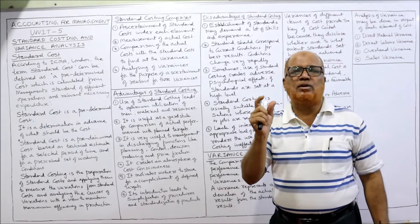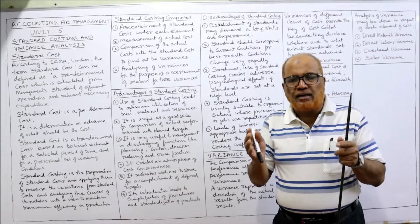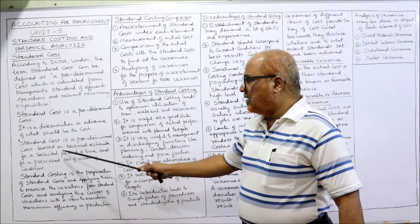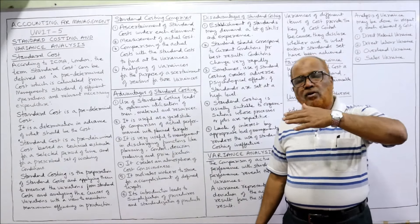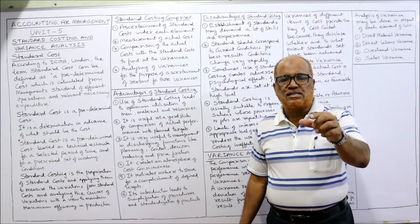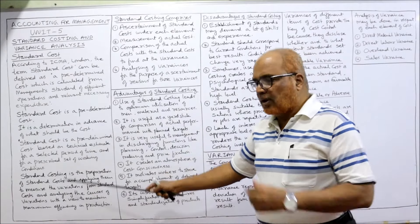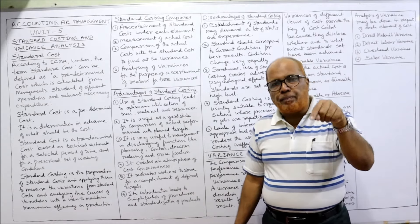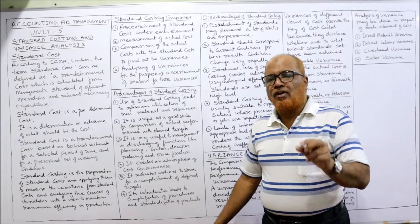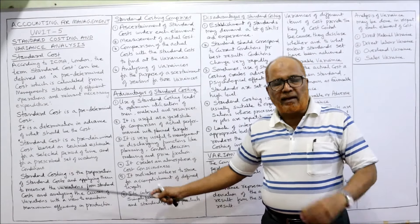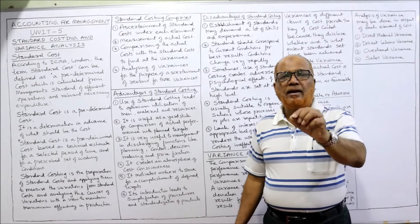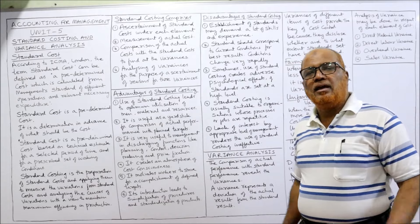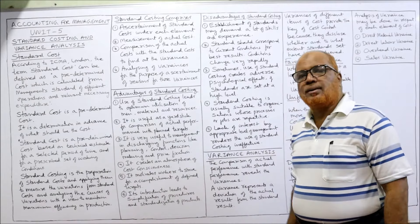Technical estimation is applied in order to calculate the standard cost, and it is for a selected period of time. The standard cost is not estimated for all future periods — it is estimated for a particular selected period of time and for a prescribed set of working conditions. So three things to remember: standard cost is a predetermined cost; it is for a selected period of time; and it is calculated using technical knowledge for a prescribed set of working conditions.